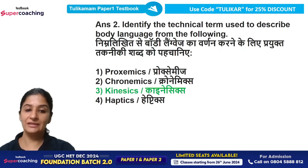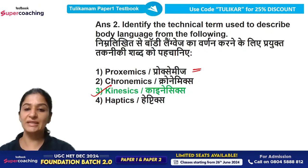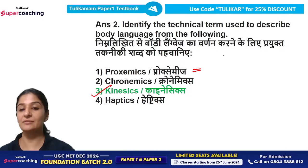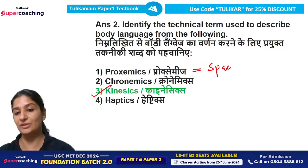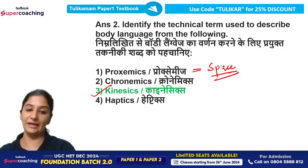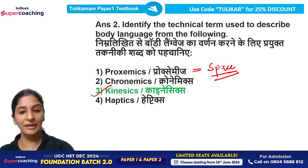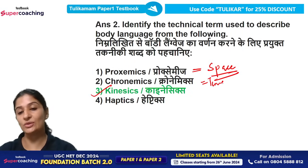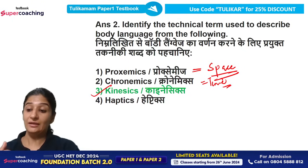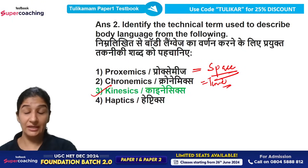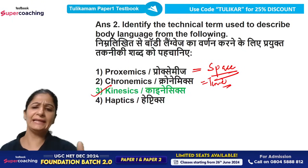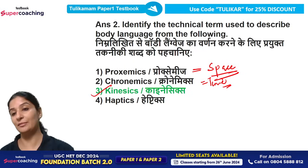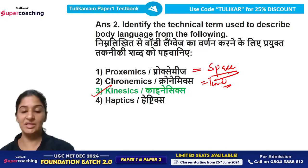The correct answer is kinesics. Proxemics refers to our personal space — how we communicate through space and the distance we maintain with others. Chronomics is associated with time — how much we value time or take things lightly. These distinctions help clarify the non-verbal communication categories.